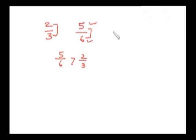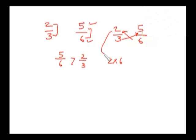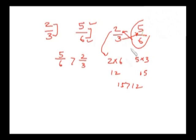Similarly, one more technique you can apply: cross multiplication. It's 2 into 6 — we start from the numerator of the left hand side fraction — and here it is 5 into 3. So here I am getting 12 and here I am getting 15. Now since 15 is greater than 12, fraction 5 by 6 will be greater than 2 by 3.